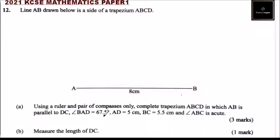What is being tested is can you be able to construct angle 67.5 degrees, how to measure the length of AD and BC and that angle ABC.